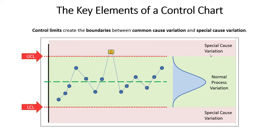There are some other rules you can apply to control charts to identify special cause variation, but as a general rule, we do use those control limits to distinguish special cause from common cause.